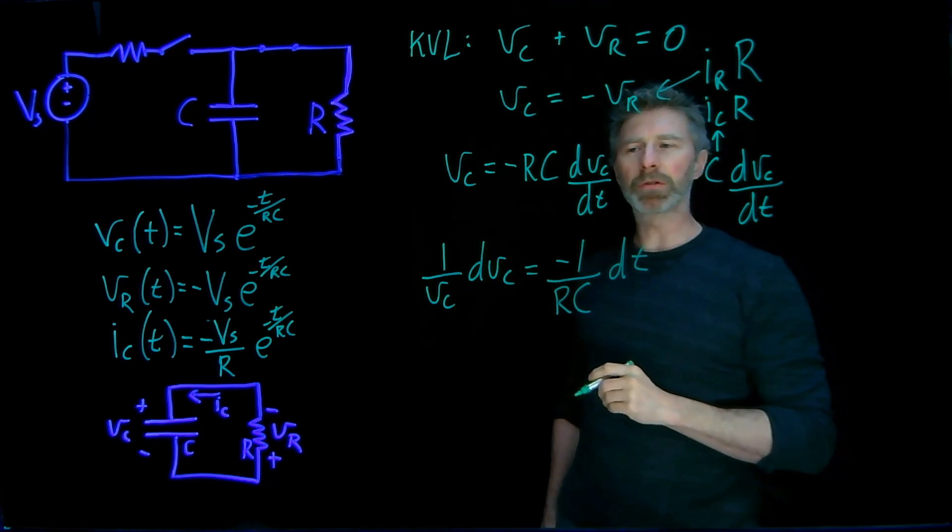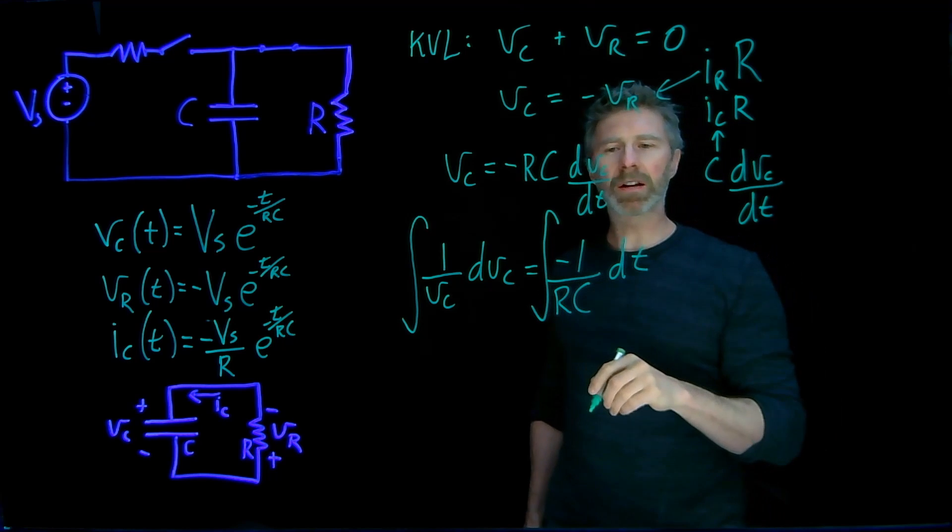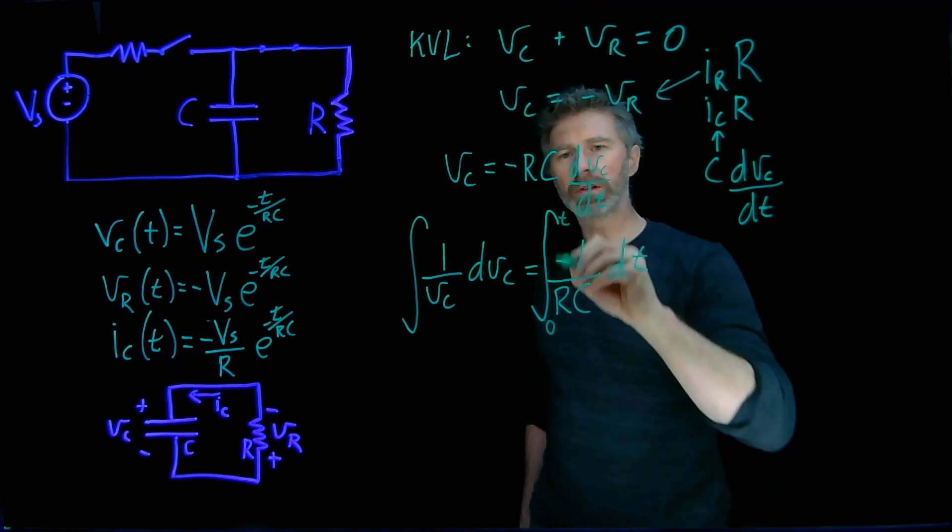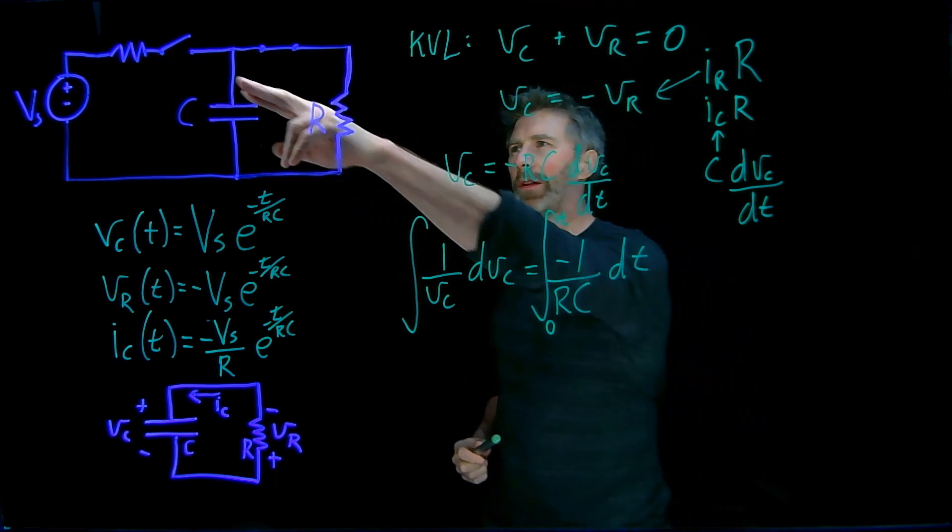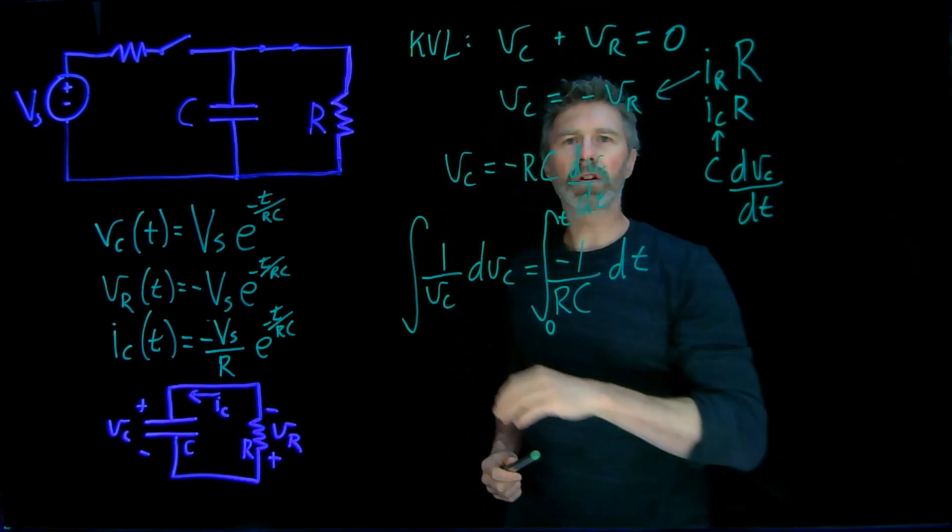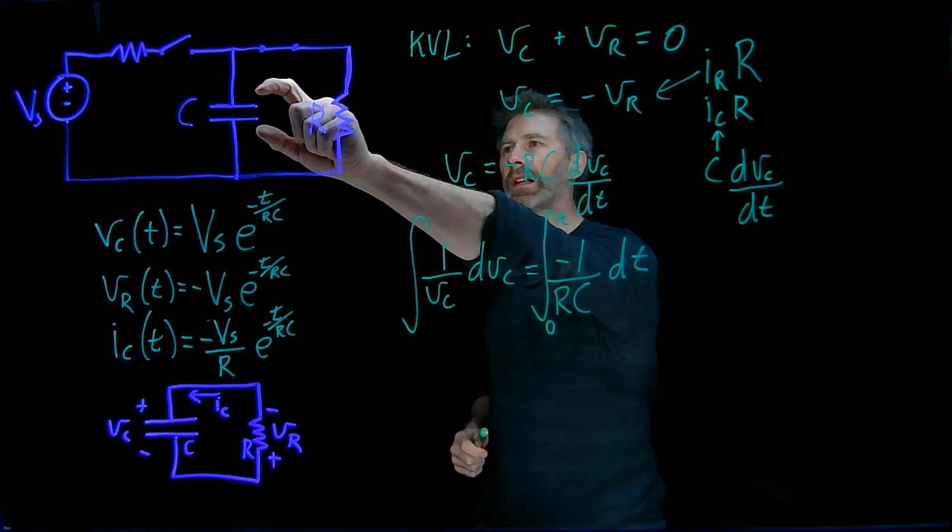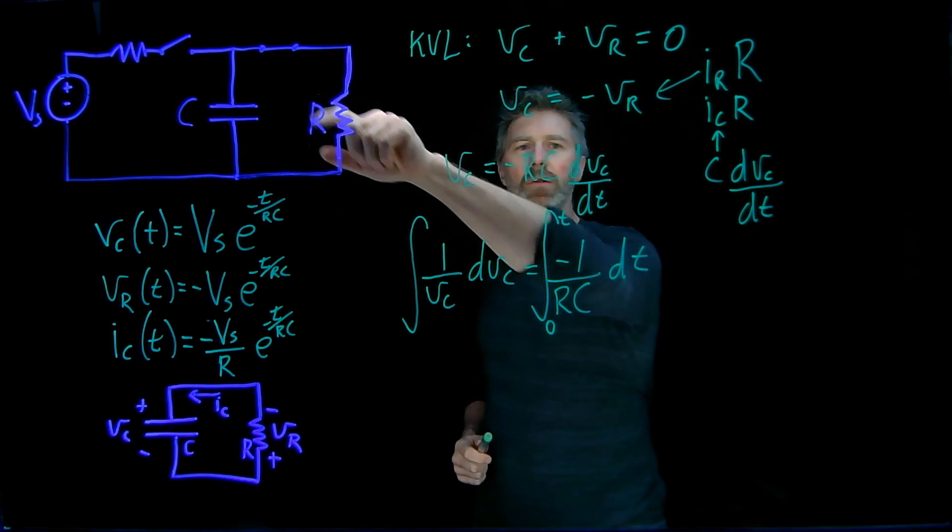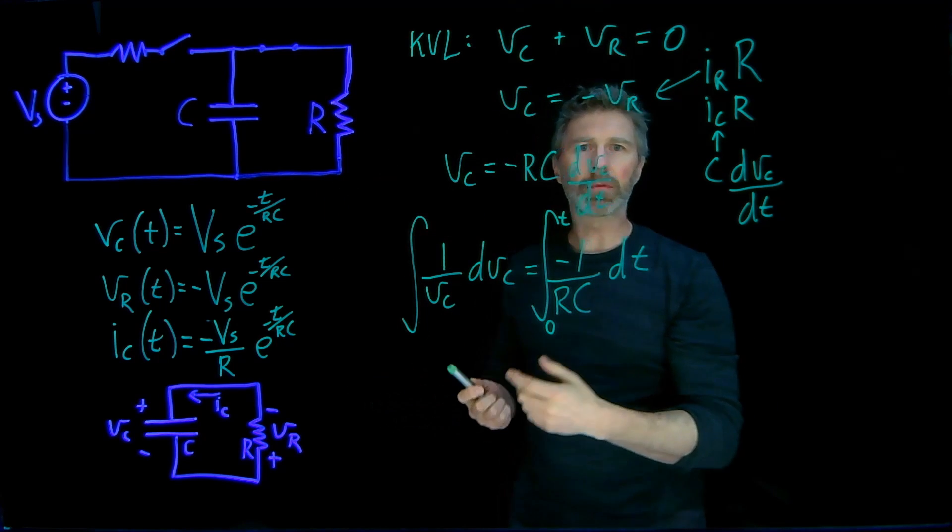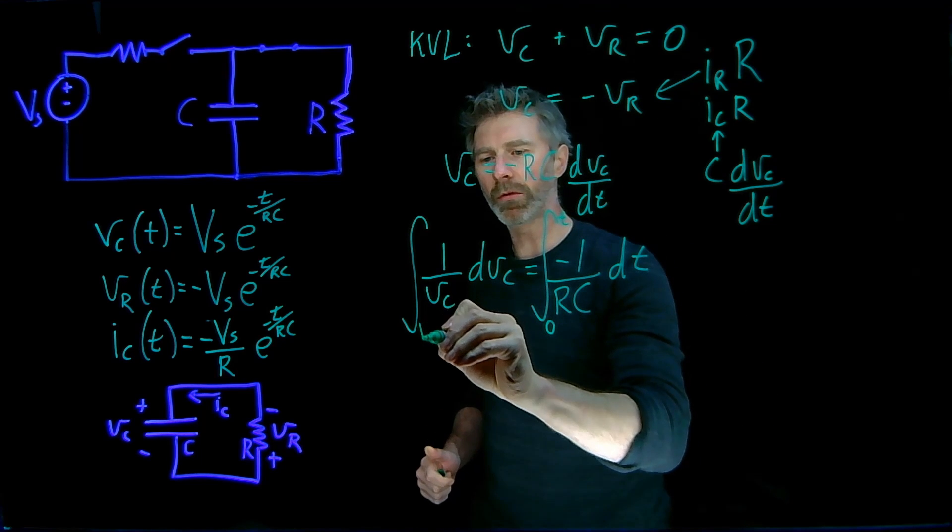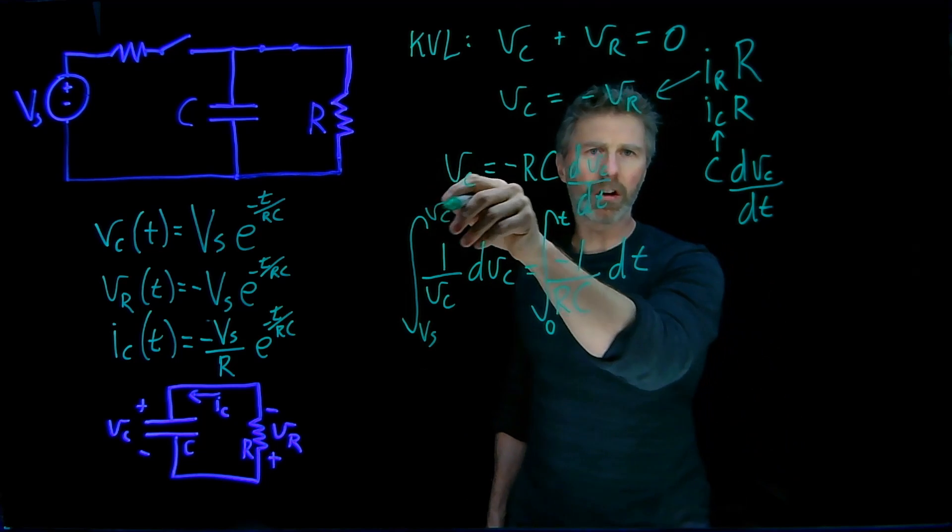Now the next step is to integrate both sides of this expression. The right hand side of the expression will go from zero up to time T. The left hand side of the expression, well remember, when this switch opens, the voltage across the capacitor, assuming the capacitor is fully charged, is going to be at VS. And then when this switch closes, it's going to start discharging towards zero. So it's going to be discharging towards something and the starting point is VS. And it's going to be discharging towards some arbitrary value we're going to call VC.